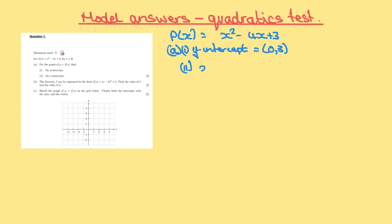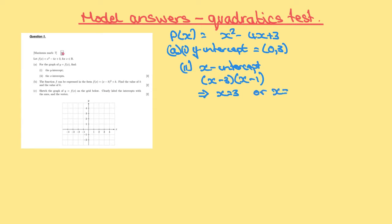To find the x-intercepts, we need to factorize x squared minus 4x plus 3. So we need two numbers that when multiplied together give us 3, and when added together give us minus 4. That gives us x minus 3, x minus 1. Therefore x equals 3 or x equals 1, so the intercepts are (3, 0) and (1, 0).